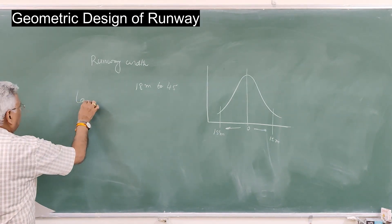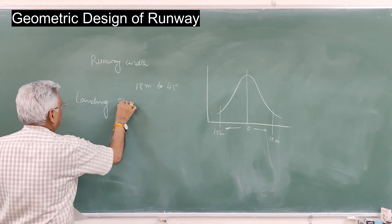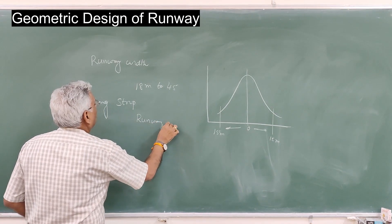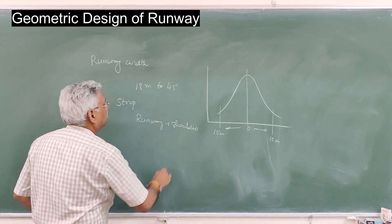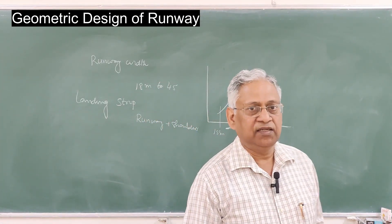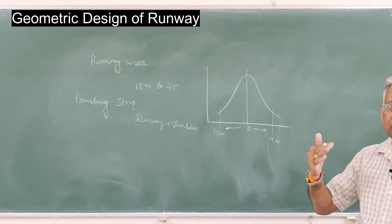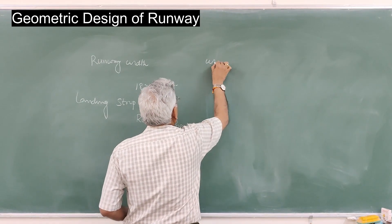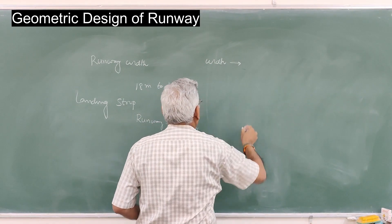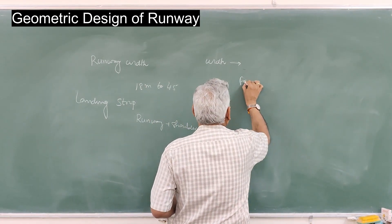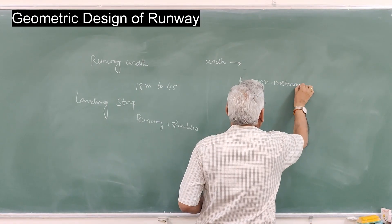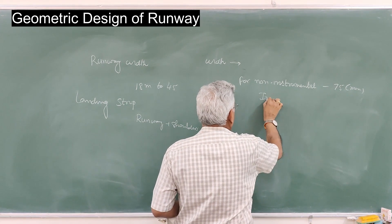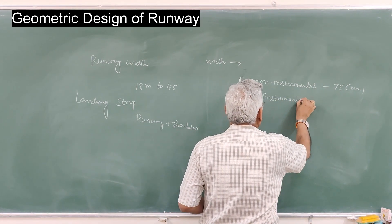Another geometric parameter is the runway safety area, or what we call the landing strip. The landing strip or runway safety area includes the paved runway plus shoulders. Shoulders are provided to give a psychological improvement to the pilot — to give openness so that the pilot feels safe while landing. Shoulders are of lesser strength and are not supposed to sustain the load of the aircraft. The width of the safety area recommended by ICAO is a minimum of 75 meters for non-instrumental runways and 150 meters for instrumental runways.